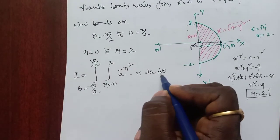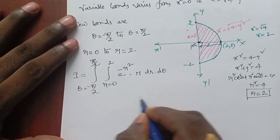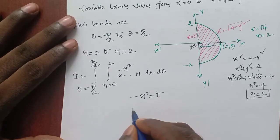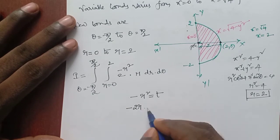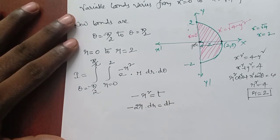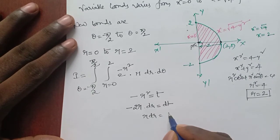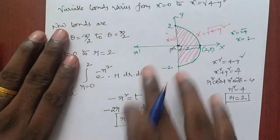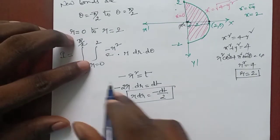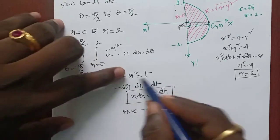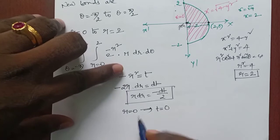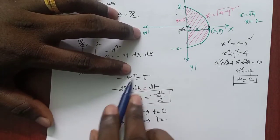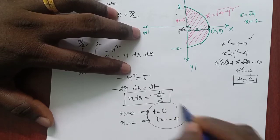For e to the power minus r square times r dr d theta, let us substitute: let minus r square equal to t. Differentiating, minus 2r dr equals dt, so r dr equals minus dt by 2. For the bounds: if r equal to 0, then t equal to 0; if r equal to 2, then t equal to minus 4. These are the new bounds for t.